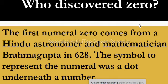In the name of Allah, the most merciful and the most beneficent. Hello everyone, welcome to Mathematics Basic to Advanced Level. Who discovered zero? The first nominal zero comes from Hindu astronomer and mathematician Brahma Gupta in 628.